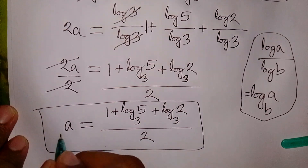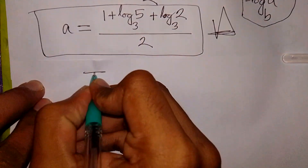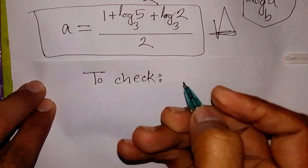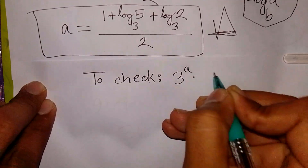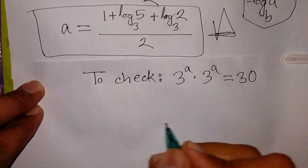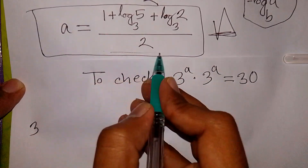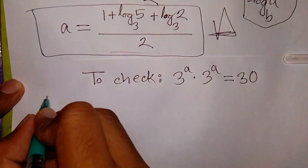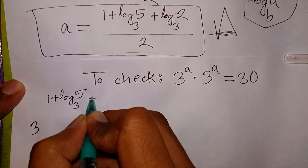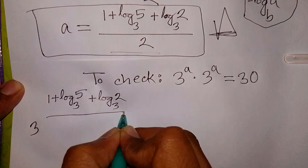So this is the value of A. Now let's check the equation: 3 power A times 3 power A is equal to 30. We substitute the value of A, which is 1 plus log₃5 plus log₃2 over 2.